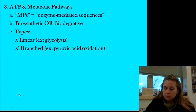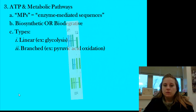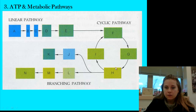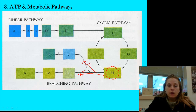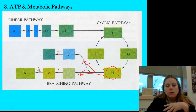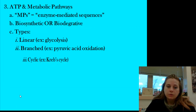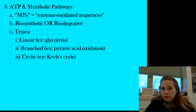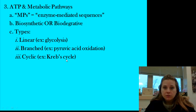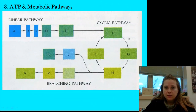Another type is a branched pathway. An example would be pyruvic acid oxidation in cell respiration, where one substrate splits into two different directions — just like a branch. One enzyme takes it one way, another enzyme takes it the other way. A third type is a cyclic pathway — a great example being the Krebs cycle, the midpoint of cell respiration, which generates coenzymes and cofactors necessary for ATP formation.